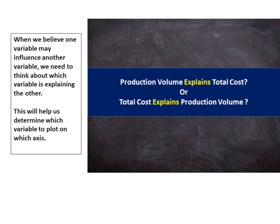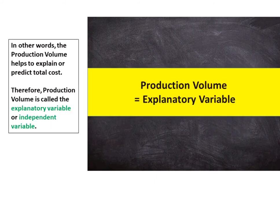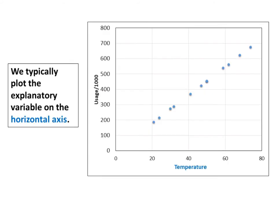This will help us determine which variable to plot on which axis. The production volume may affect the total cost, but the total cost does not affect the production volume. In other words, the production volume helps to explain or predict the total cost. Therefore, production volume is called the explanatory variable or independent variable. We typically plot the explanatory variable on the horizontal axis.